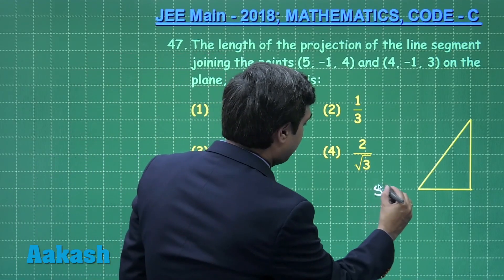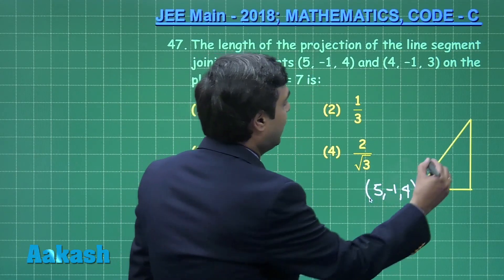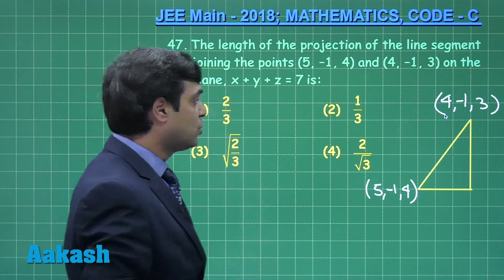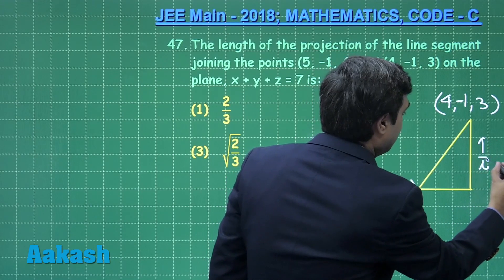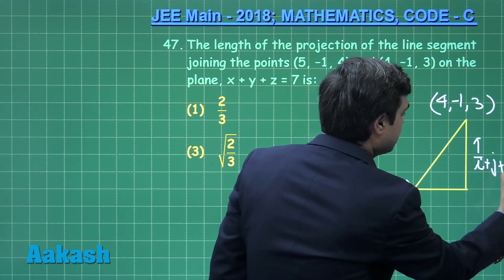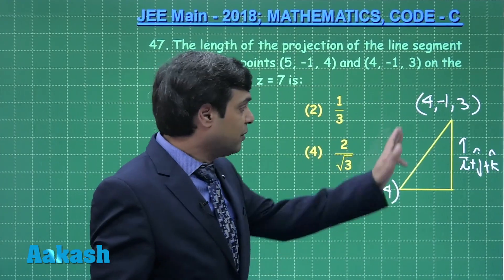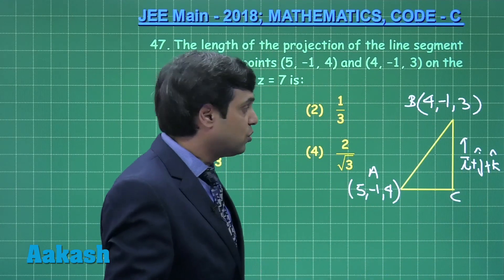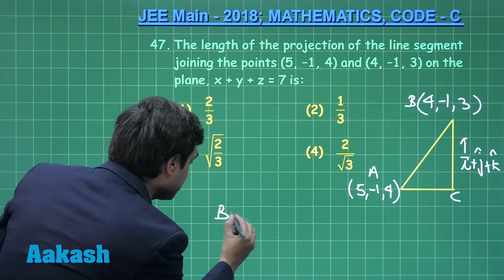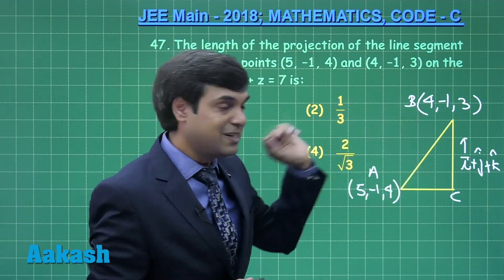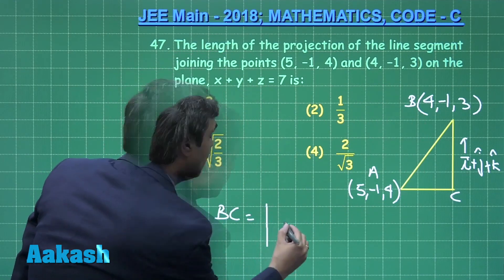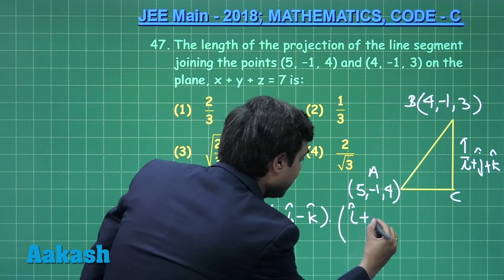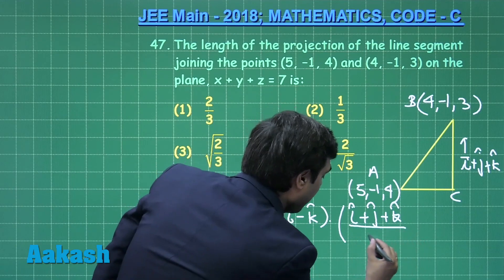Points are given as (5, −1, 4) and (4, −1, 3). The normal vector to the plane is i + j + k. The vector AB along the segment is −i − k. We find the projection of AB onto BC (along the normal direction), giving the length of BC.